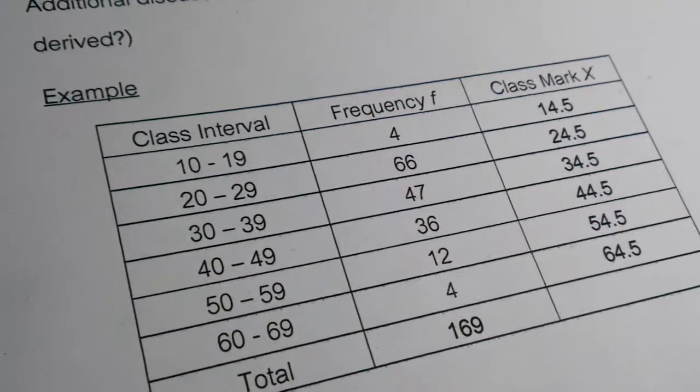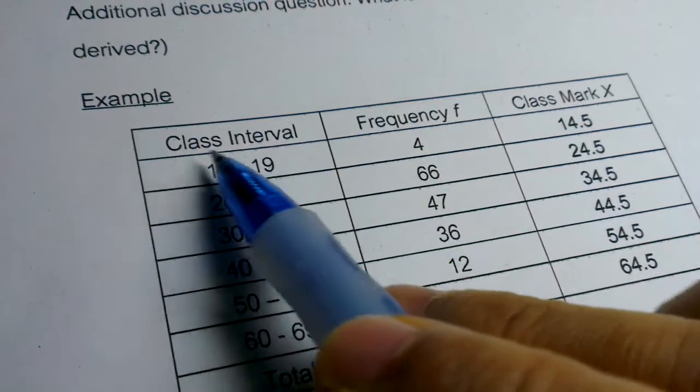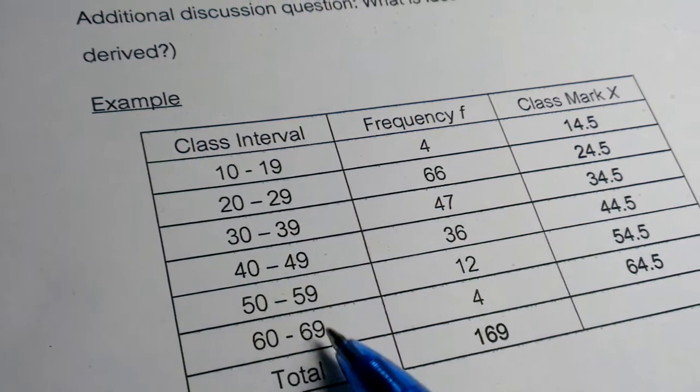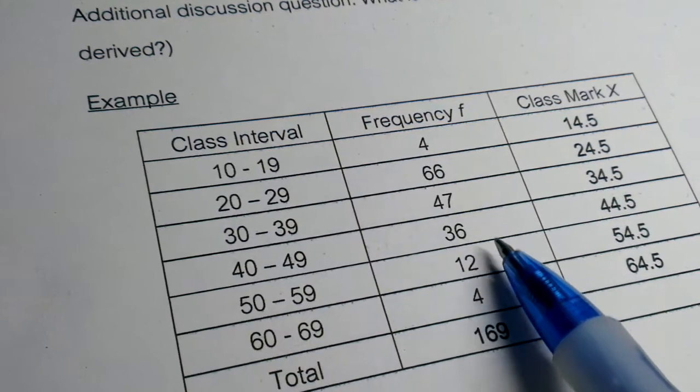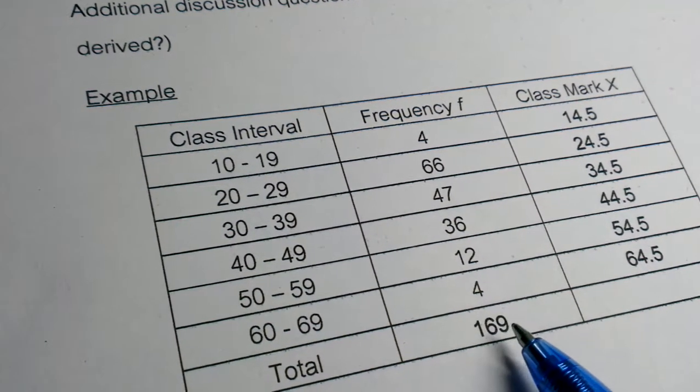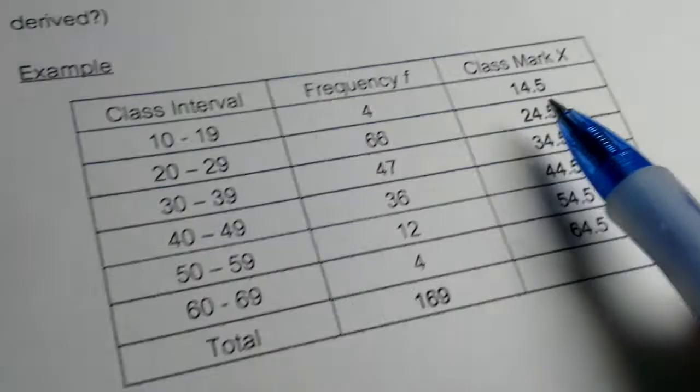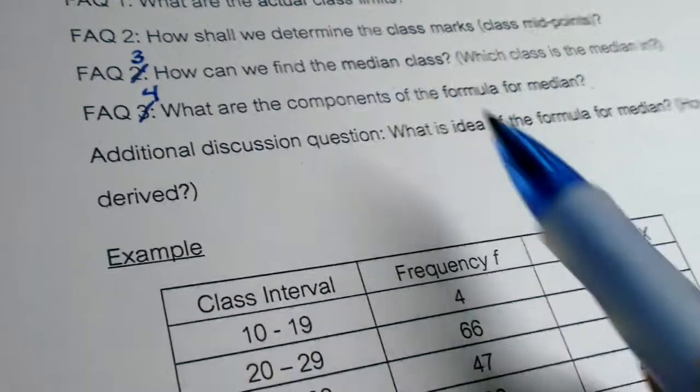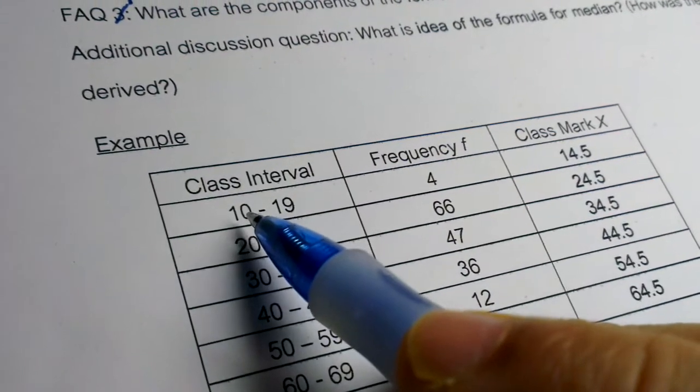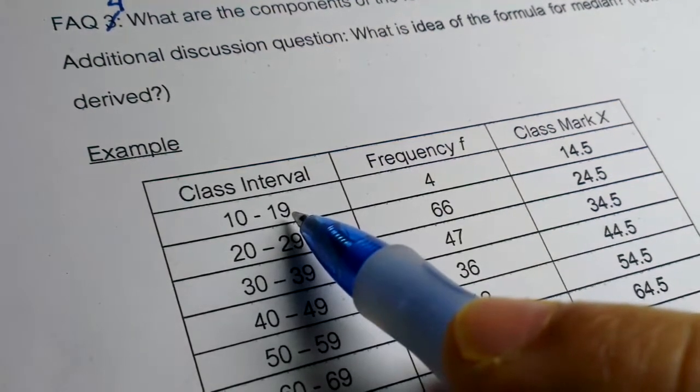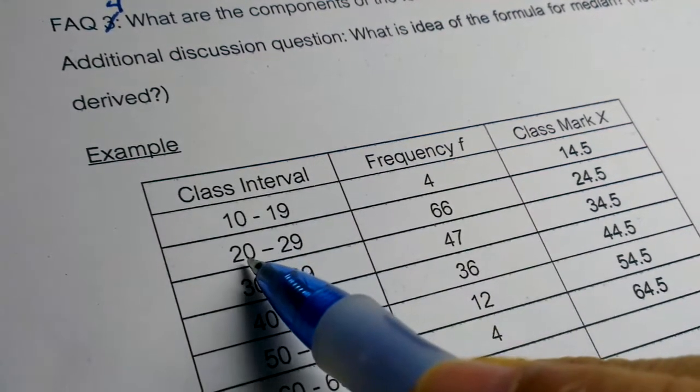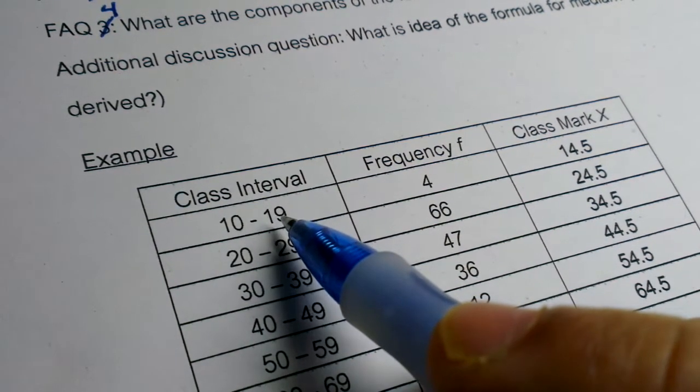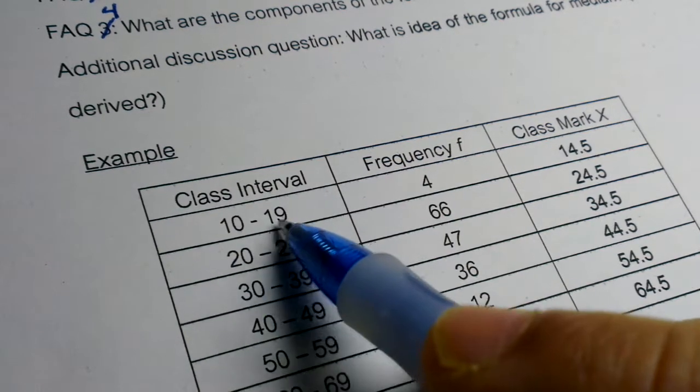To answer these questions, we will consider this example of grouped data. Class intervals are like this. Frequencies of data are like this. Totally 169 data. So number 1 question is what are the accurate class limits? Here, 10 to 19 the first class. The second class is 20 to 29. So what shall we do with the data between 19 and 20? There is some gap.